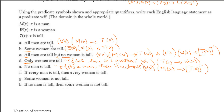'If every man is tall then every woman is tall.' So: for all x, if x is a man then x is tall — this whole statement implies that for anything, if it is a woman then it is also tall. Written as: (∀x(M(x) → T(x))) → (∀x(W(x) → T(x))).